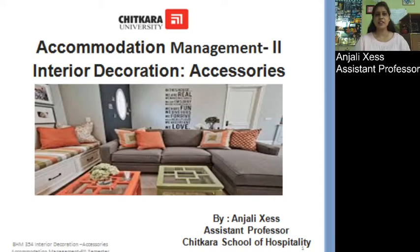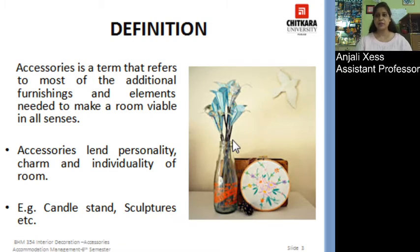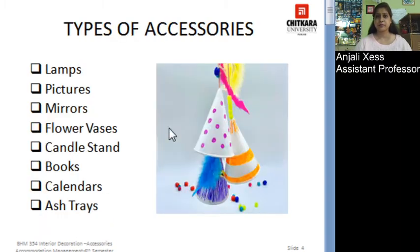We start with another chapter on interior decoration accessories. The content covers definitions, types of accessories, functions, classification, placement, and selection. Accessories is a term that refers to the additional furnishing and elements needed to make a room more viable in all senses. It adds personality, charm, and individuality to a room. For example: candle stands, pen stands, flower vases, picture frames, and structures.